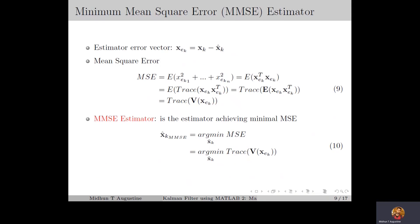Now let's discuss the basic idea of an important class of estimator called the MMSE estimator. We have the estimation error vector XEK, which is the difference between the actual state and the estimated state. From this we can define the mean square error or MSE, which gives the expected value of the squared error — equal to the expected value of XEK transpose XEK. Now XEK transpose XEK equals the trace of XEK times XEK transpose, because XEK times XEK transpose is an n by n matrix whose diagonal elements are XEK1 squared, XEK2 squared, and XEKn squared.